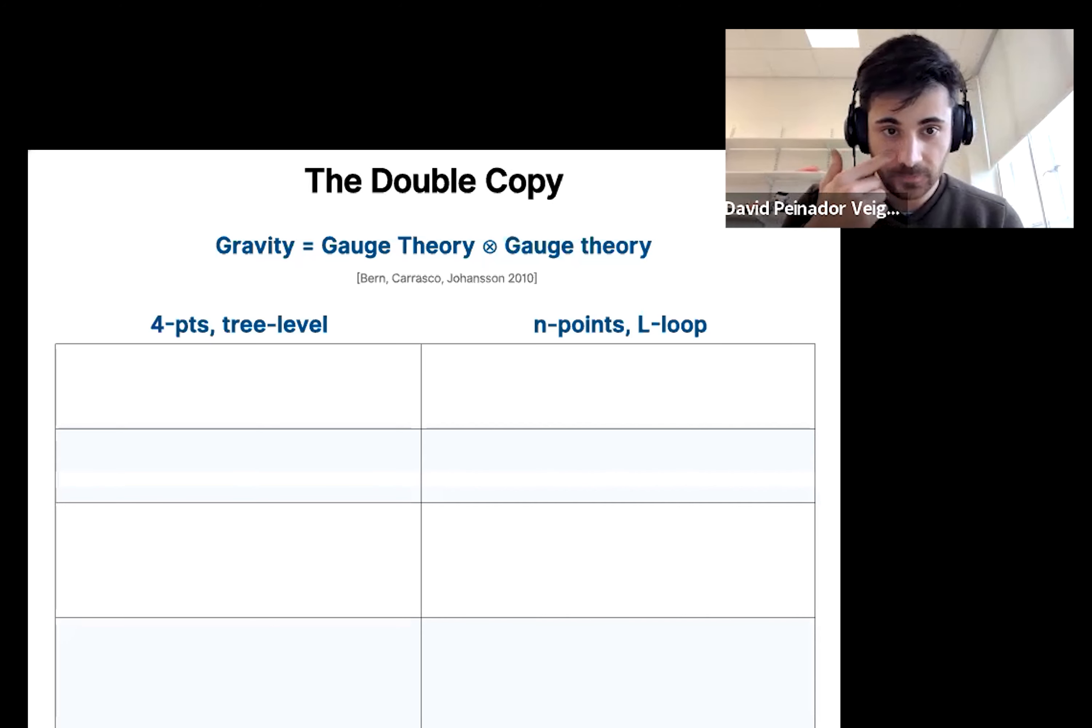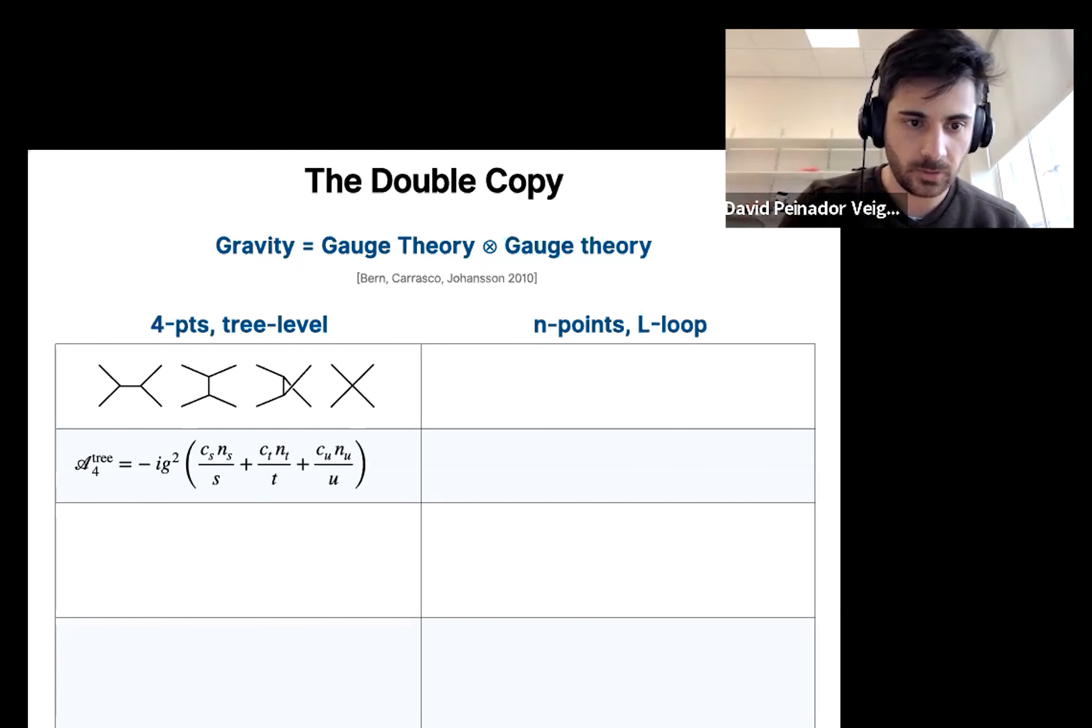So in this slide, I'm going to give you, first of all, a 4-point, tree-level example of how it works, and also the general case. But let's start with the simple one. So consider a 4-point, tree-level amplitude in a gauge theory, let's say Yang-Mills. You have those four diagrams, the S, T, U channels, and the contact term. You can write this amplitude as this, where I'm gathering terms according to the propagators, basically the channels. This one you can divide into these three.